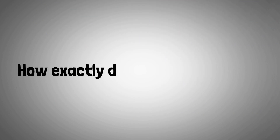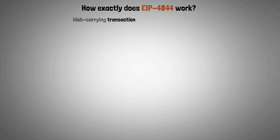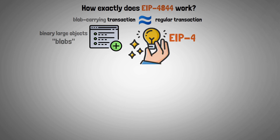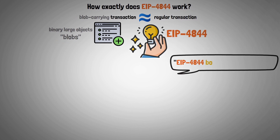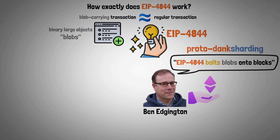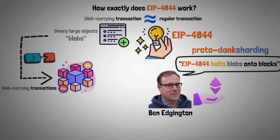Now let's look at how exactly EIP 4844 works. Blob-carrying transactions, which are similar to regular transactions but with additional pieces of information known as binary large objects or blobs, will be the main innovation in EIP 4844. The memorable alliterative phrase, 'EIP 4844 bolts blobs onto blocks,' is how Ethereum contributor Ben Edgington sums up Proto-Danksharding. It briefly explains how blobs are attached to blocks in blob-carrying transactions, increasing the amount of data that these blocks can hold.